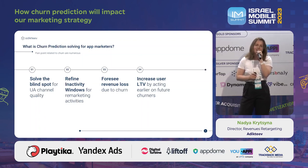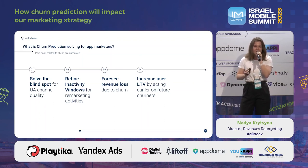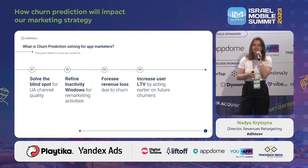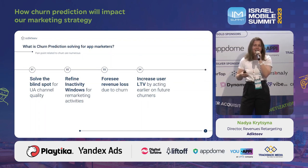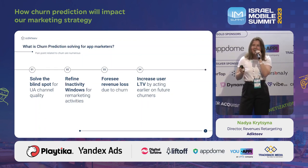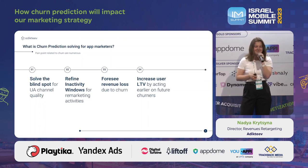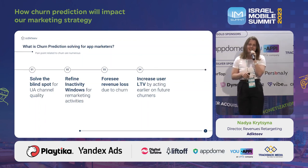It depends on the application and business model. For hyper casual apps, LTV of the user is really short and it's okay for them to churn early. For dating apps, they're not really interested in retaining lapsed users because this means users have already found a match — they focus more on activating users and upselling. But for gaming, it's a classic case: they pay a lot to acquire users and then want to do the maximum to keep them purchasing and increasing the LTV.